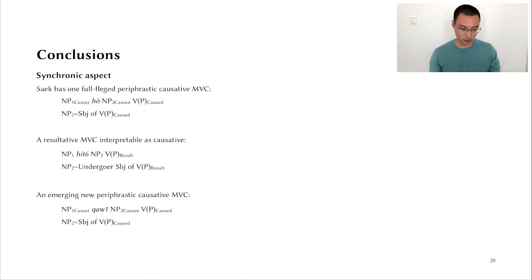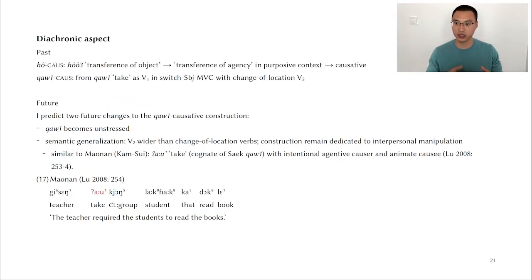So to conclude this talk, first of all, the synchronic aspects. I have shown that Saek has one full-fledged periphrastic causative multiverb construction which uses hǎi in the causative slot. There's also a resultative multiverb construction that is interpretable as a causative. And then there's this emerging new periphrastic causative which uses ʔau in the slot. The diachronic aspect, I'm not going to repeat that for the interest of time, but in the future, I predict two changes to the ʔau causative construction. One is that ʔau is going to become unstressed, and the other is semantic generalization. So the second verb is going to be no longer restricted to change of location verbs, but the construction itself is going to remain dedicated to interpersonal manipulation. So essentially, it's going to develop into what's found in Maonan. Which is the Kam-Sui language. The teacher takes the students to read a book, which means the teacher requires the students to read the books.